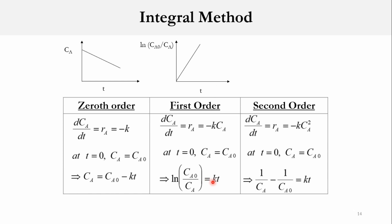For second order, dC_A/dt equals r_A equals minus k times C_A squared. Applying the same integration limits, we get 1/C_A minus 1/C_A0 equals k·t, or equivalently 1/C_A equals 1/C_A0 plus k·t. Here t is the x-axis, 1/C_A is the y-axis, and the slope is k.